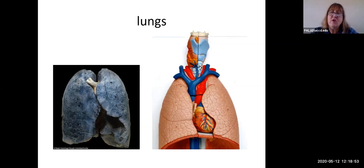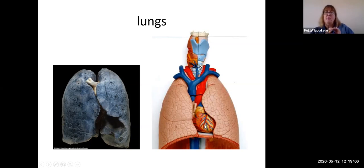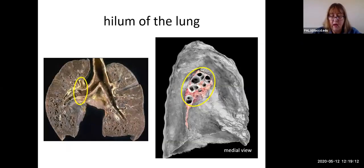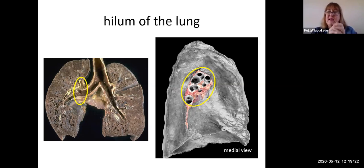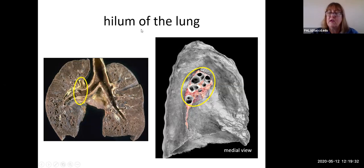Looking at the lungs, we have two of them, but they are not equal. The heart sits in the midline, but because it's rotated and angled, part of it extends into the left side of the chest, so there's less area for lung on the left side. There's only one area where all structures enter and exit the lung, and that is known as the hilum of the lung.